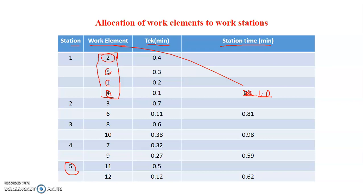In the next video, we will learn how to assign work elements into each machine according to the precedence diagram using the largest candidate rule. The rule means: the work element with the most processing time is assigned first, provided it satisfies the sequence shown in the precedence diagram. If all conditions are satisfied — the precedence sequence and the cycle time constraint — then we can assign work elements into different machines accordingly.